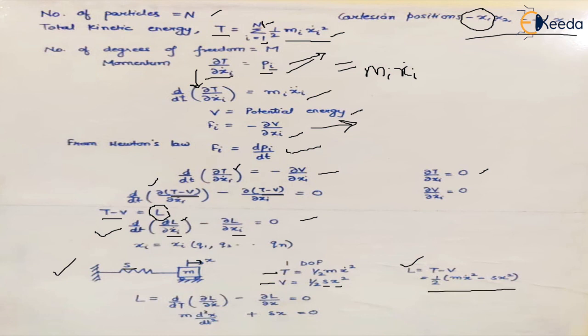If we place the value of L in the equation, we get m d²x/dt², which is mass times acceleration. We can write this equation as m x double dot plus s x equals zero.